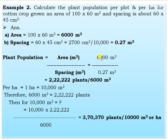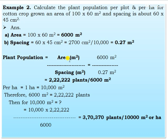Example 2: Calculate the plant population per plot and per hectare for cotton grown in an area of 100 by 60 meters with spacing of 60 by 45 cm. The area is 6,000 m². Spacing: 60 × 45 = 2,700 cm², converted to 0.27 m². Plant population = 6,000 ÷ 0.27.